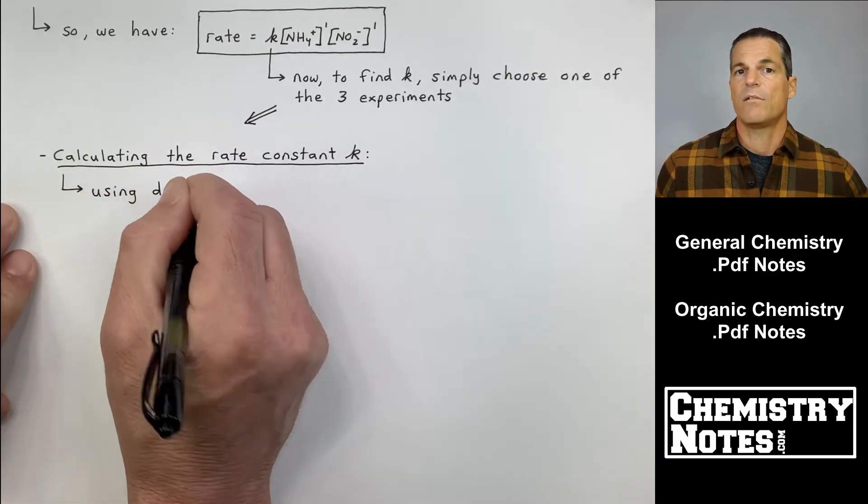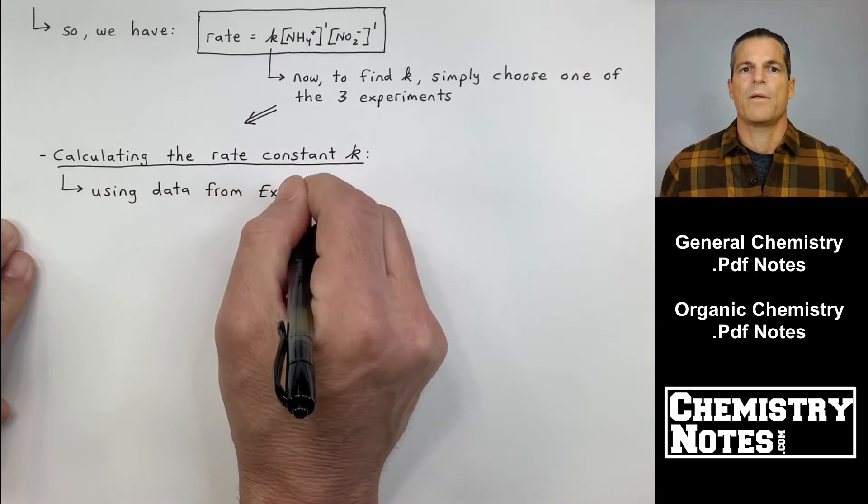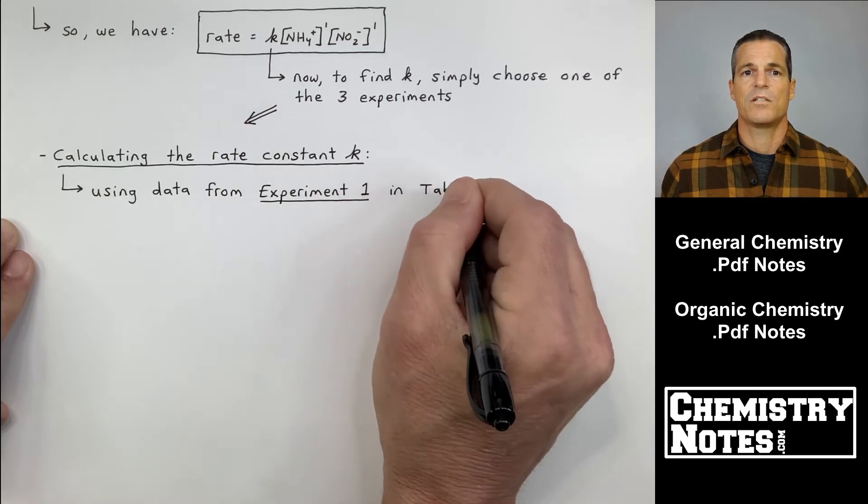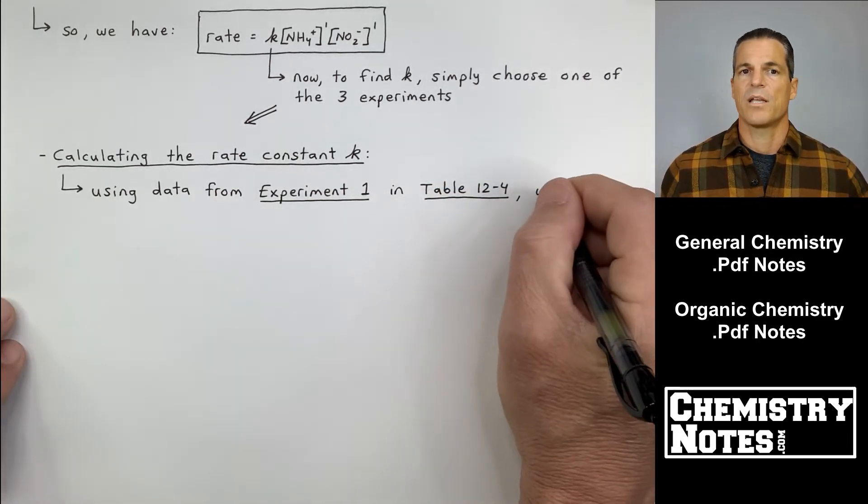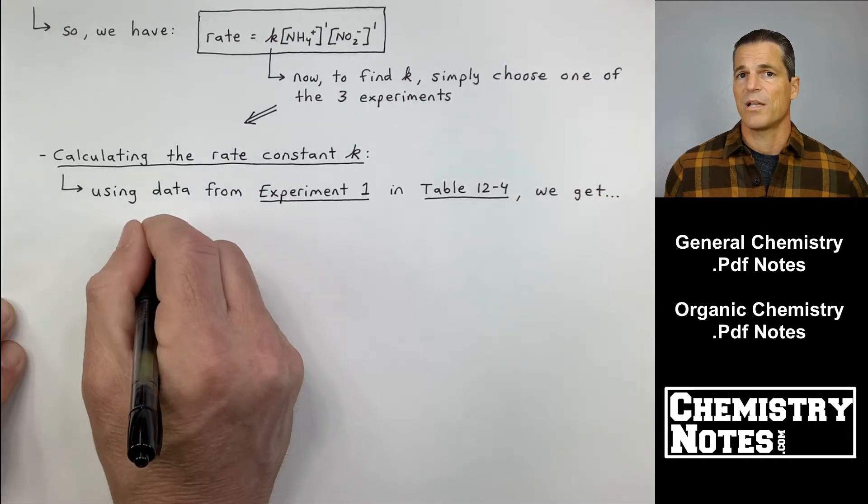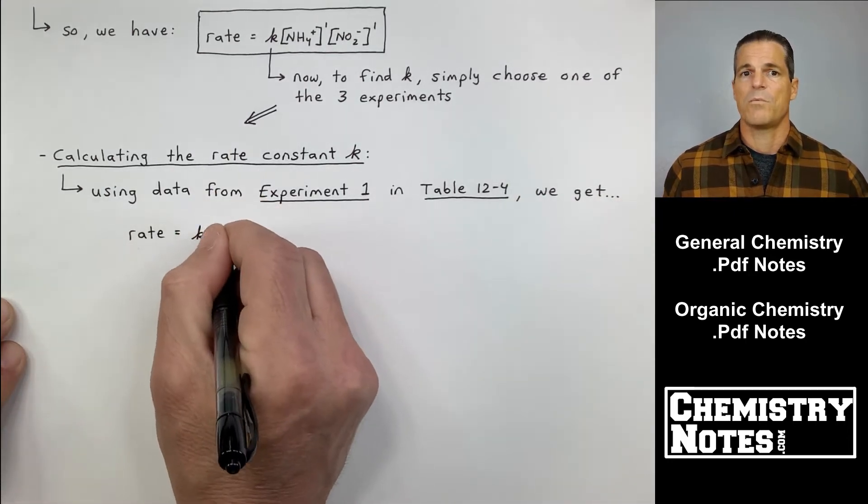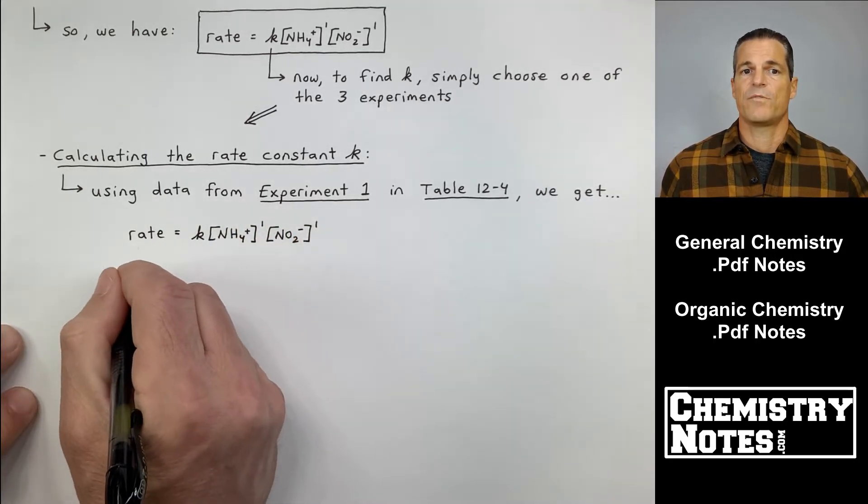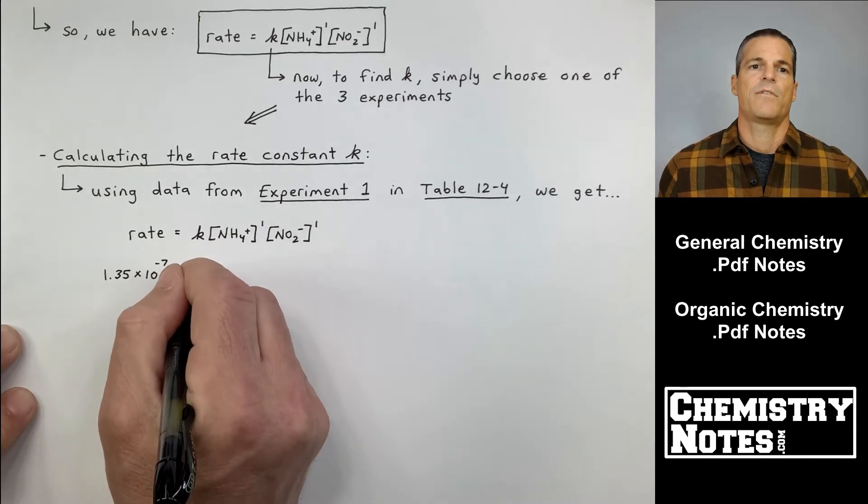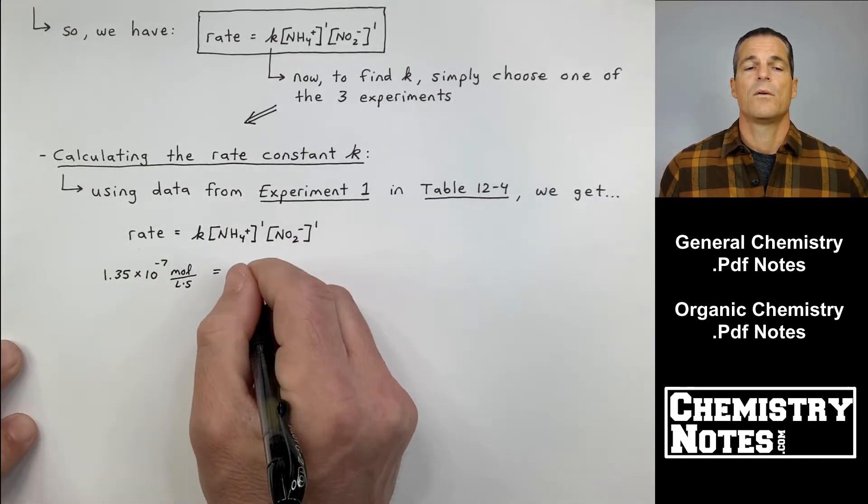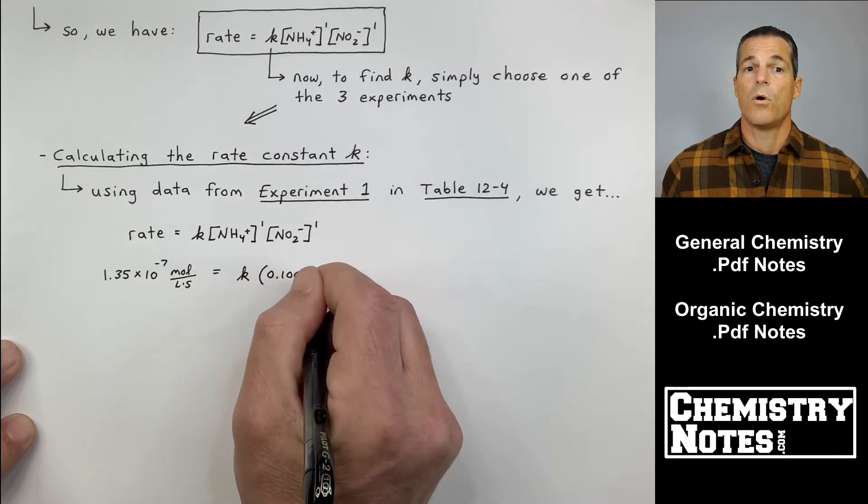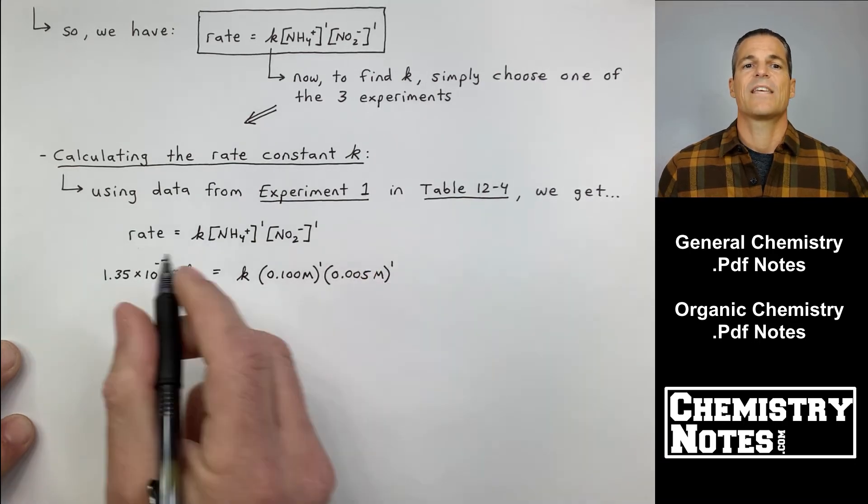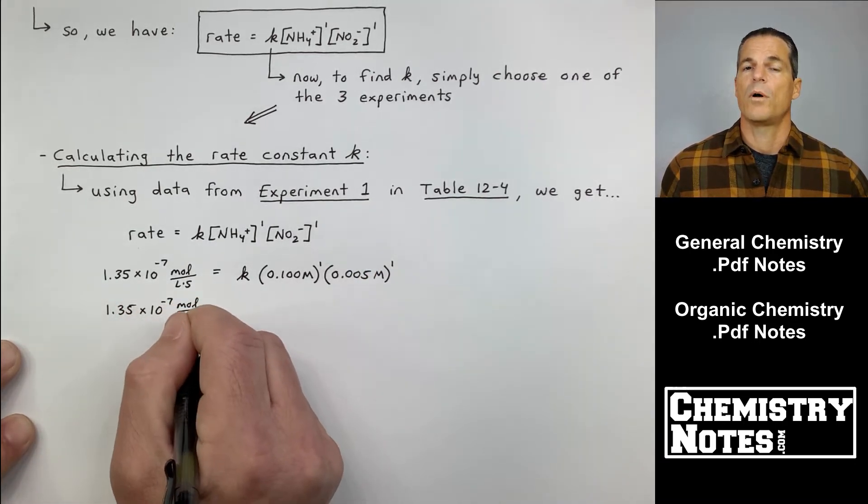If I go back and look at table 12-4, I can take any one of those three experiments. I'm going to use data from experiment number one. I always just take the first experiment and plug stuff in. I'm going to plug in my rate, my concentration of NH4+, and my concentration of NO2-. I got three things to plug in from the data for experiment one. If I do that, I get the following: rate equals K times the concentration of NH4+ times the concentration of NO2-.